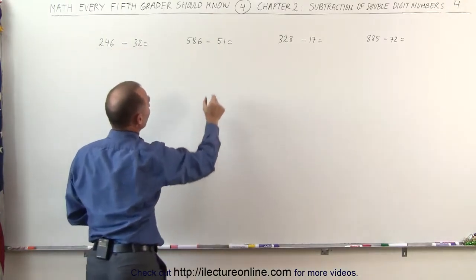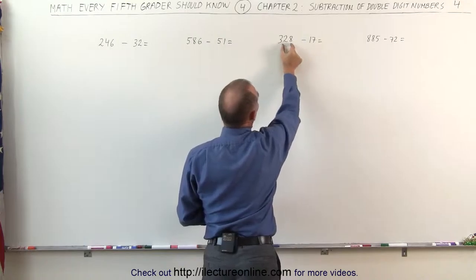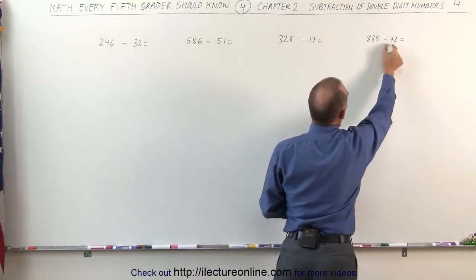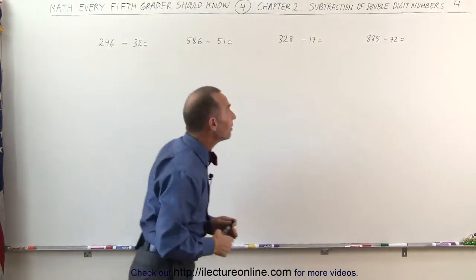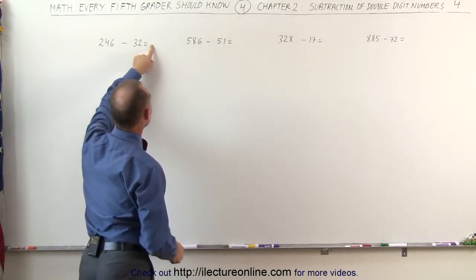32 is smaller than 46. Here we can see that 51 is smaller than 86, 17 is smaller than 28, and 72 is smaller than 85. Which means that the first number, the hundreds digit, will remain intact when we place it over there.